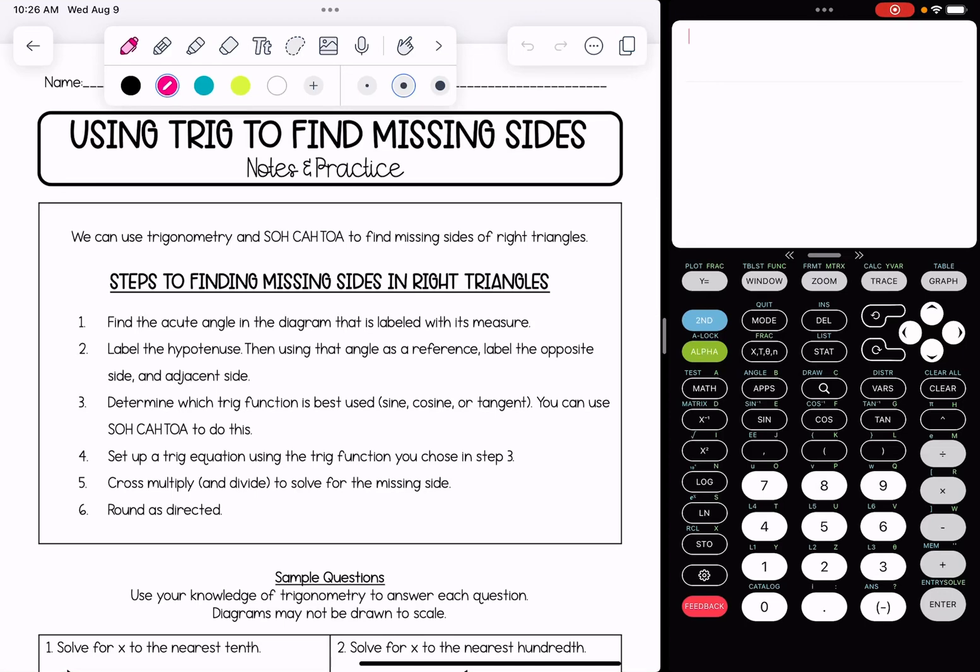In this video, we're going to be learning how to use right triangle trigonometry in order to find missing sides. We can use trigonometry and our acronym SOHCAHTOA to find the missing sides of right triangles.